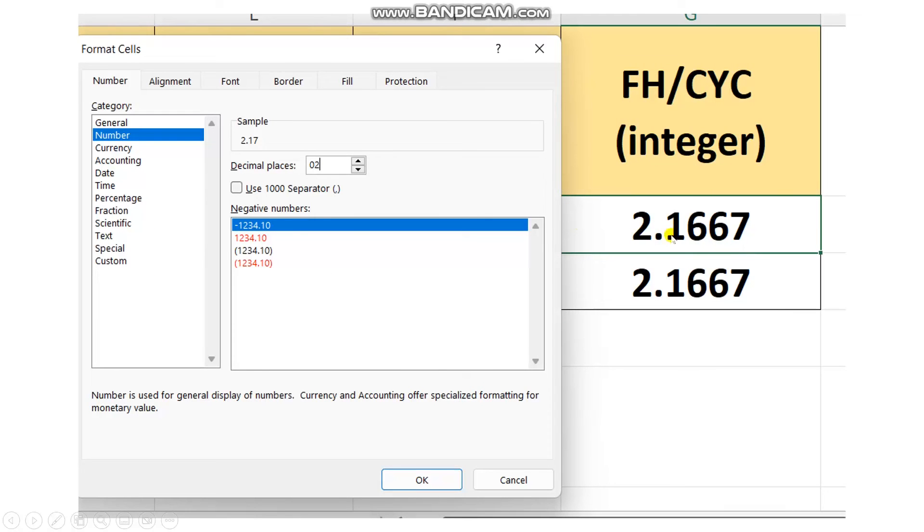This is the fourth decimal here. If you want to change it to two decimals. Click on the cells here. Choose the format cell from Excel. Then number. Then here. Choose here two.